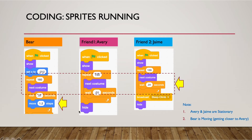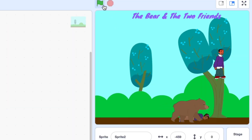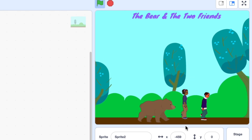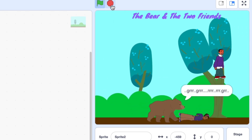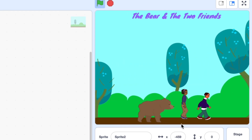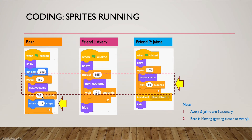You would notice one more interesting thing: the position of Avery and Jamie is actually stationary. Though they are walking, it is just the background which is moving. However, for Bear, the background is moving and at the same time it is coming closer to Avery and Jamie. Bear is moving closer to Avery while they remain at the same position. Bear is starting from here and coming closer — that is achieved using step movement only for Bear. Avery and Jamie remain the same.